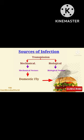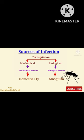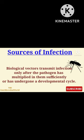An example of a biological vector is the mosquito, which transmits malaria. Biological vectors transmit infection only after the pathogen has multiplied in them sufficiently or has undergone a developmental cycle.